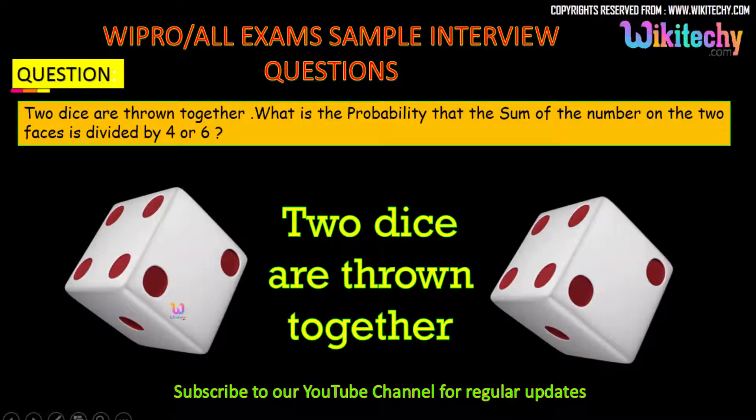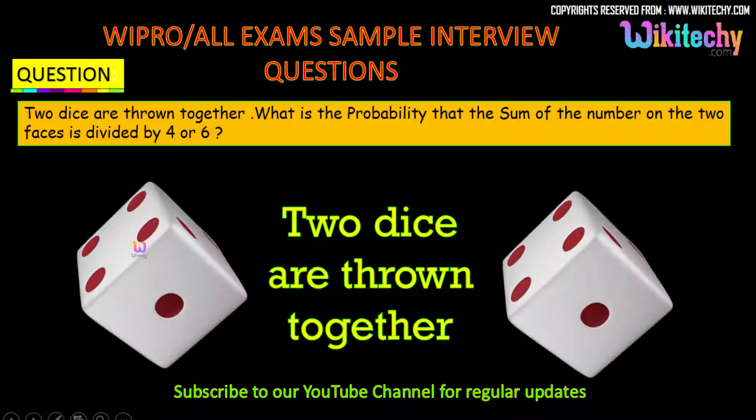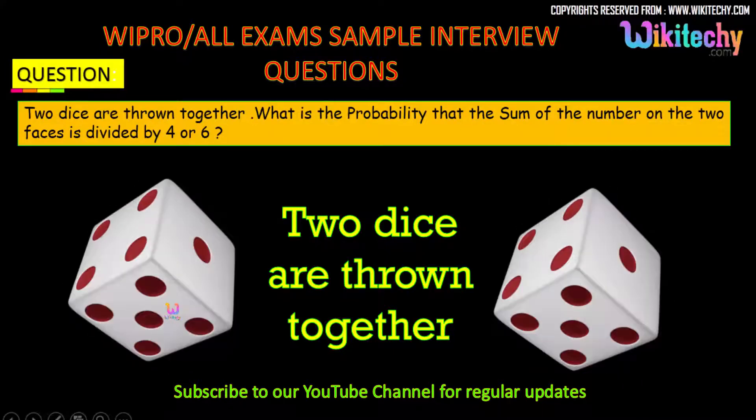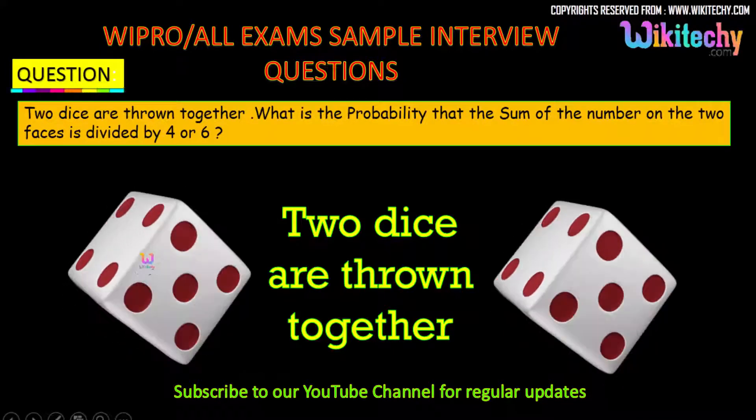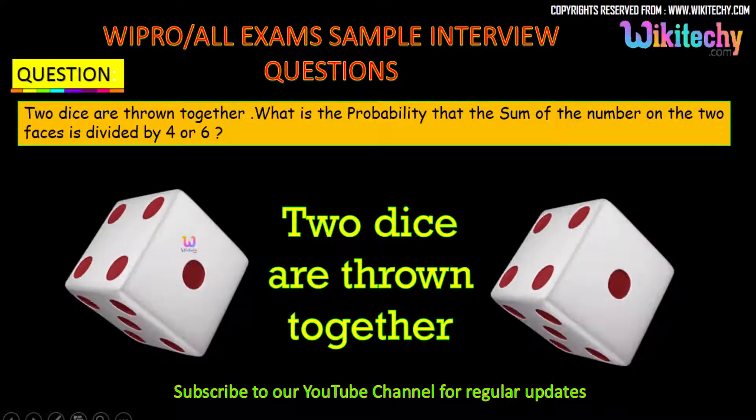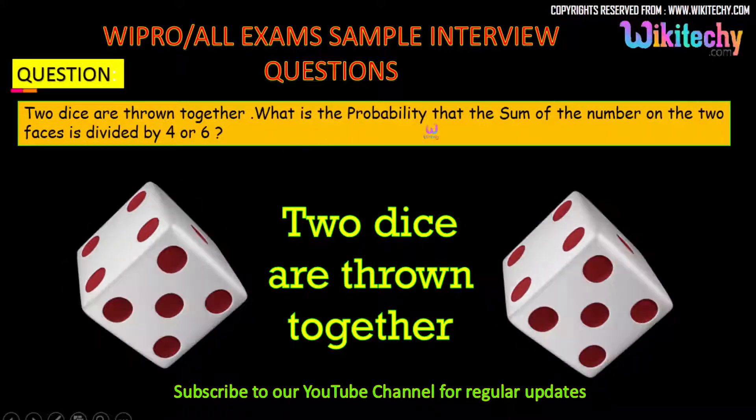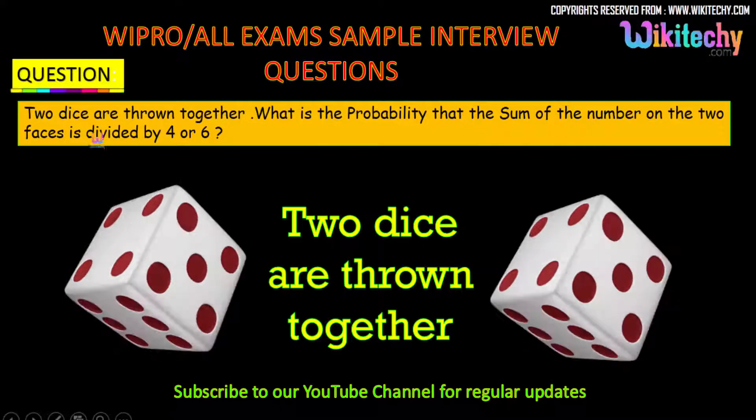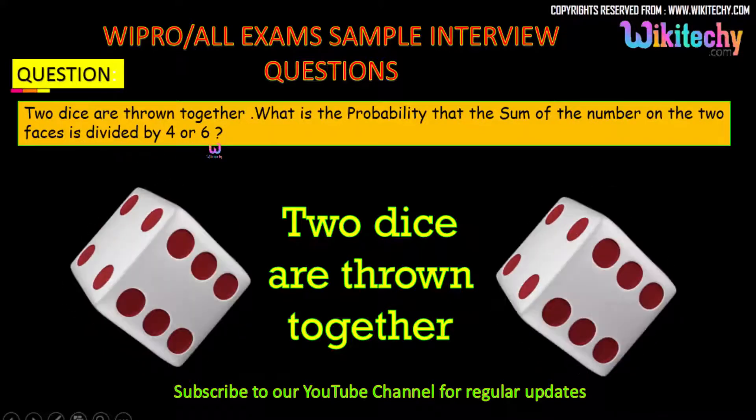The dice will have 1, 2, 3, 4, 5, and 6. These are the possible numbers we get when we throw the dice. The question is: the sum of the numbers on the two faces is divisible by 4 or 6.